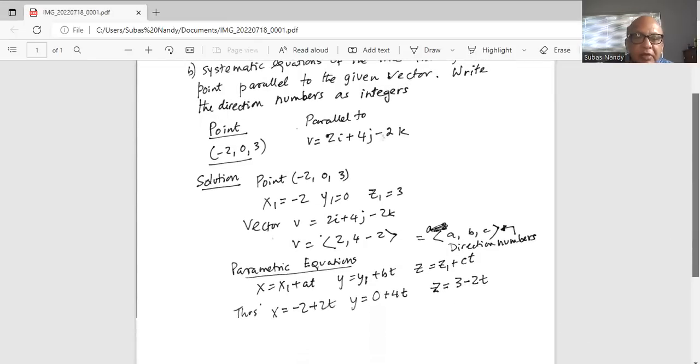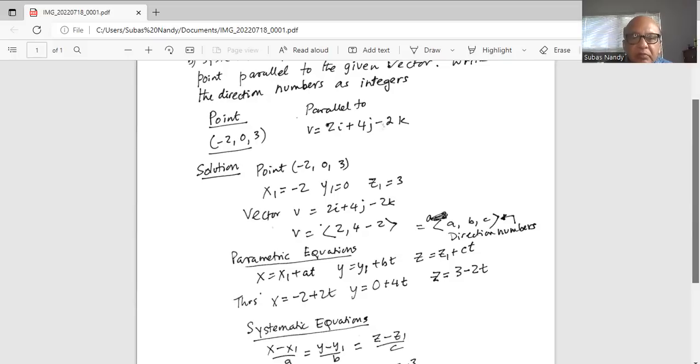So parametric equation of the line passing through the point is x equal to x1 plus at. A is two, b is four, and c is minus two. These are the directional numbers coming from the vector to which the line will be parallel. So x is x1 plus a times t. This is the parametric equation.